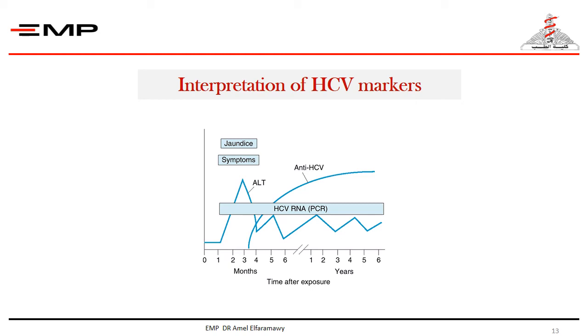Fluctuating mild to moderate elevation of ALT and AST over long periods is characteristic of chronic HCV infection.